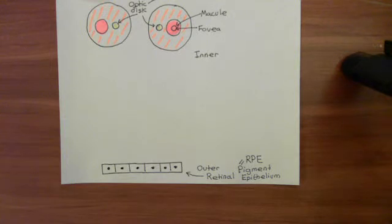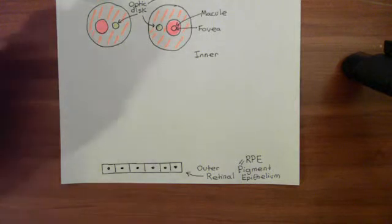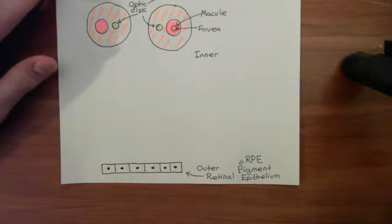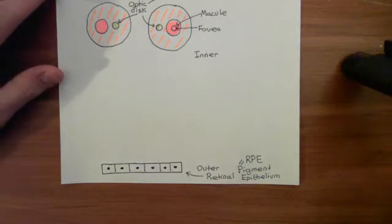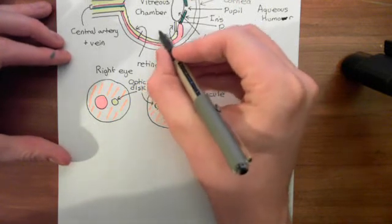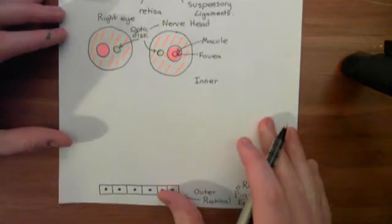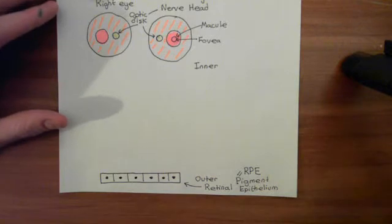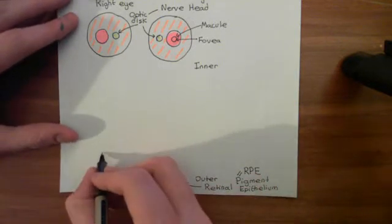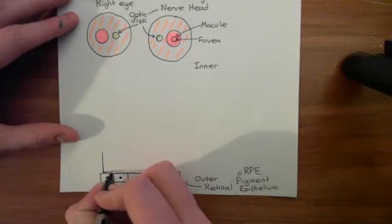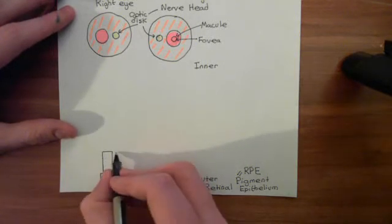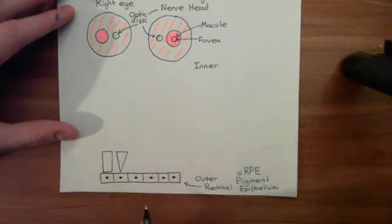The next layer of cells up from the RPE consists of the photoreceptors. What everyone always finds strange about the retina is that the cells which actually detect the light are right at the bottom, so all the light has to go through a huge number of other layers before reaching the photoreceptors — it seems a little upside down. There are two types of photoreceptors: rod cells and cone cells. Rod cells are named because the light-detecting portion is rod-shaped, and cone cells because the light-detecting portion is cone-shaped.